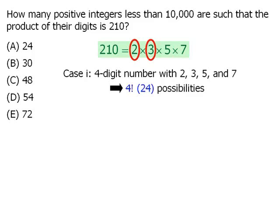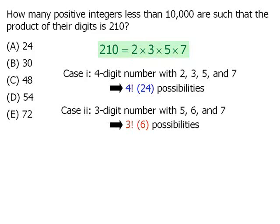Now notice that we can combine our 2 and 3 in our factorization to get a 6. So in case two, we're going to look at three digit numbers that consist of a 5, a 6, and a 7. The total number of ways we can arrange these three digits is 3 factorial.